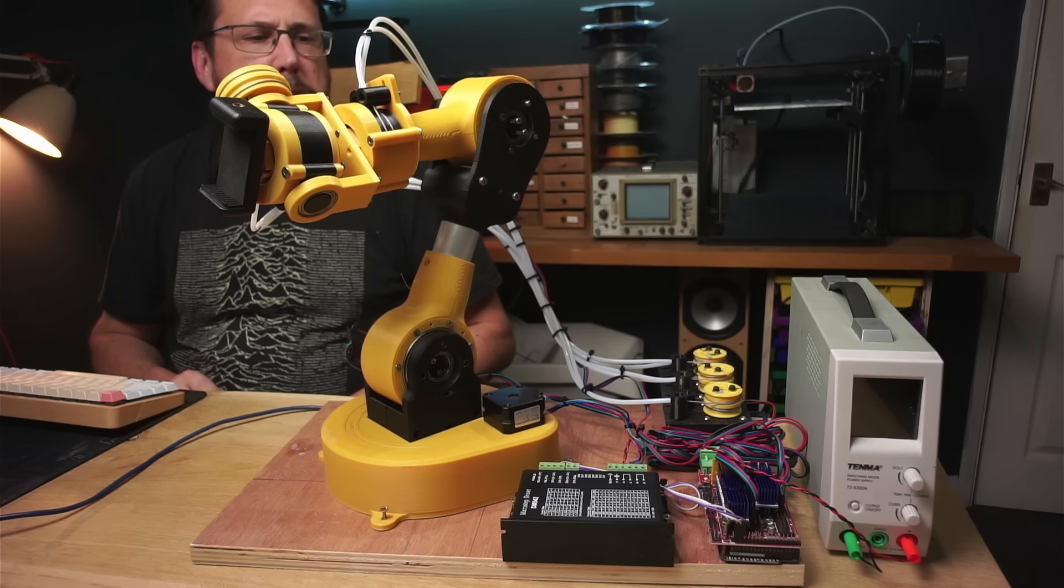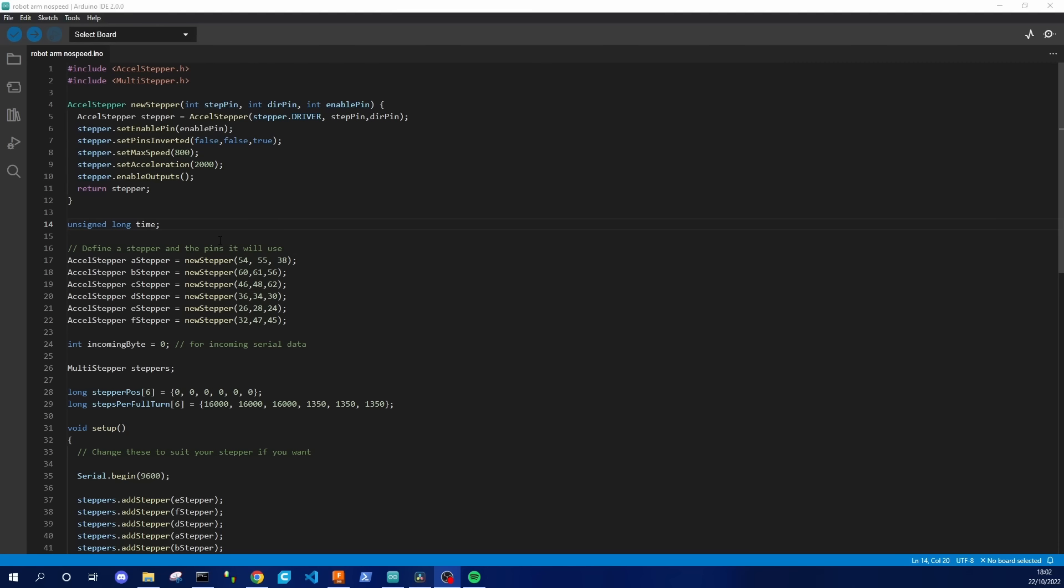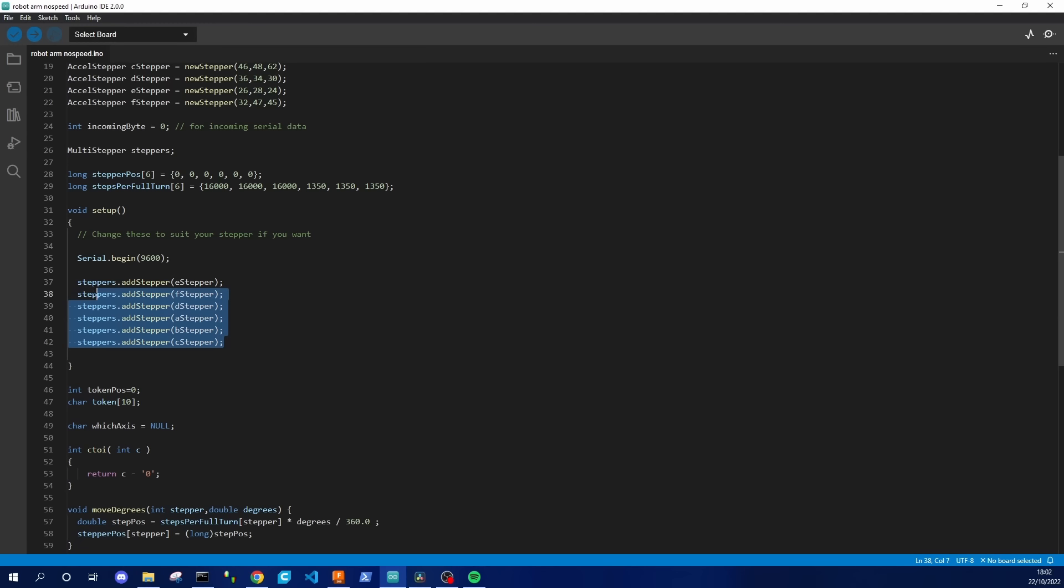We're going to need some software to drive this though, so let's dive straight into the Arduino IDE. The code itself is really simple. We're just using the AccelStepper library to create a load of new stepper motors. These are the pins that the RAMPS board uses to control the stepper drivers. We then add them all into a multi-stepper object so that we can control them all at the same time.